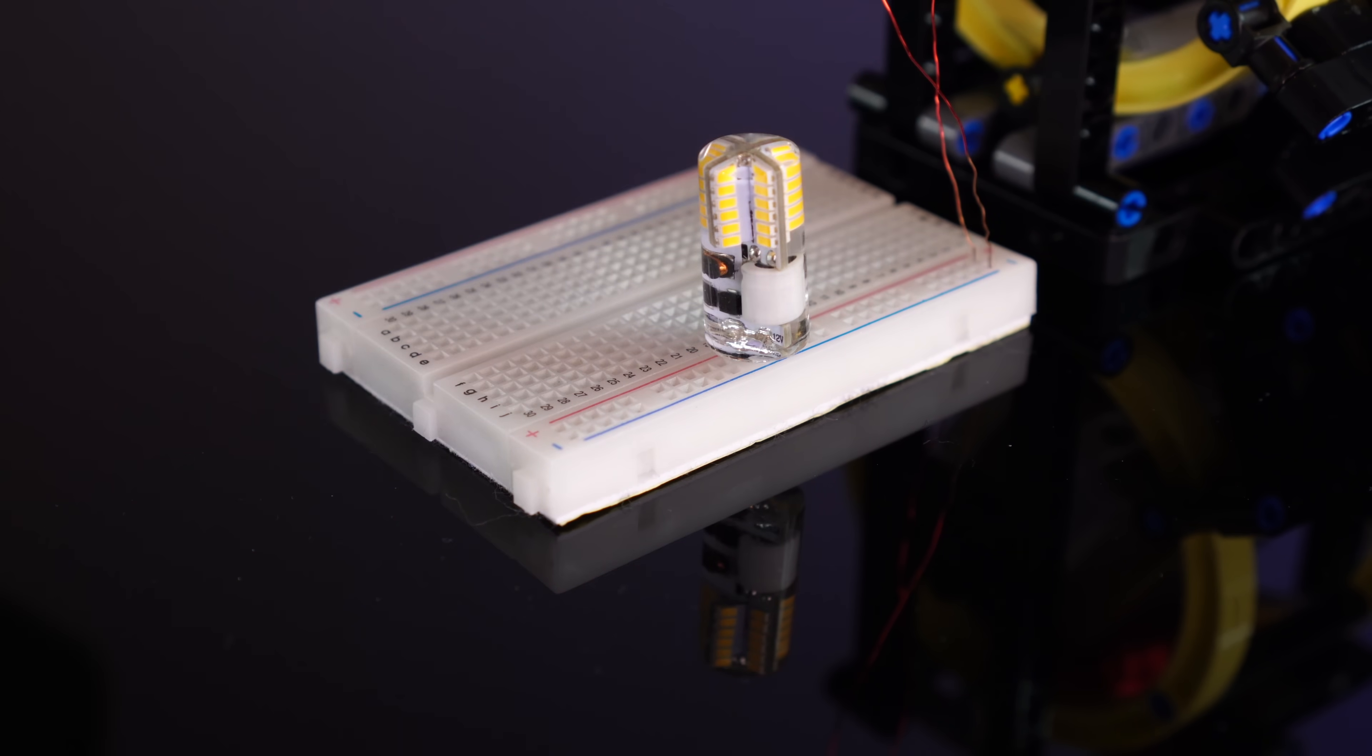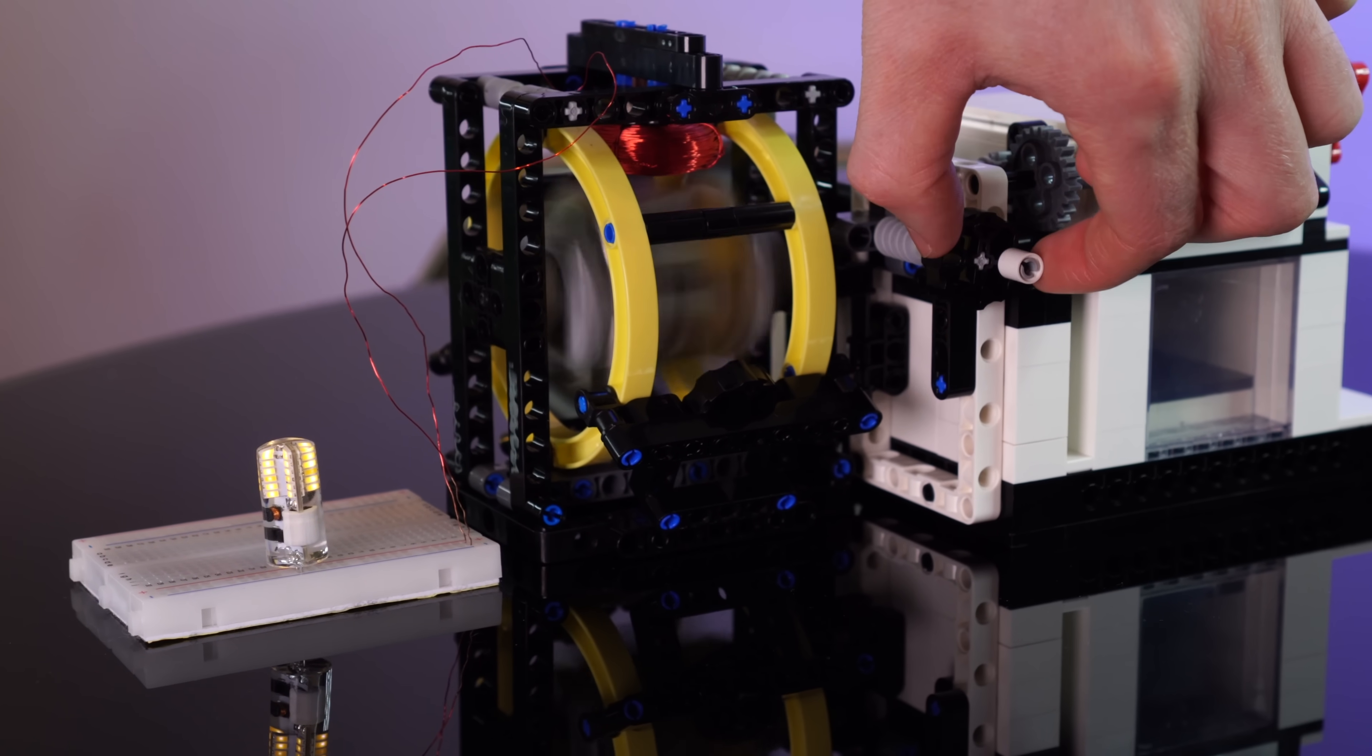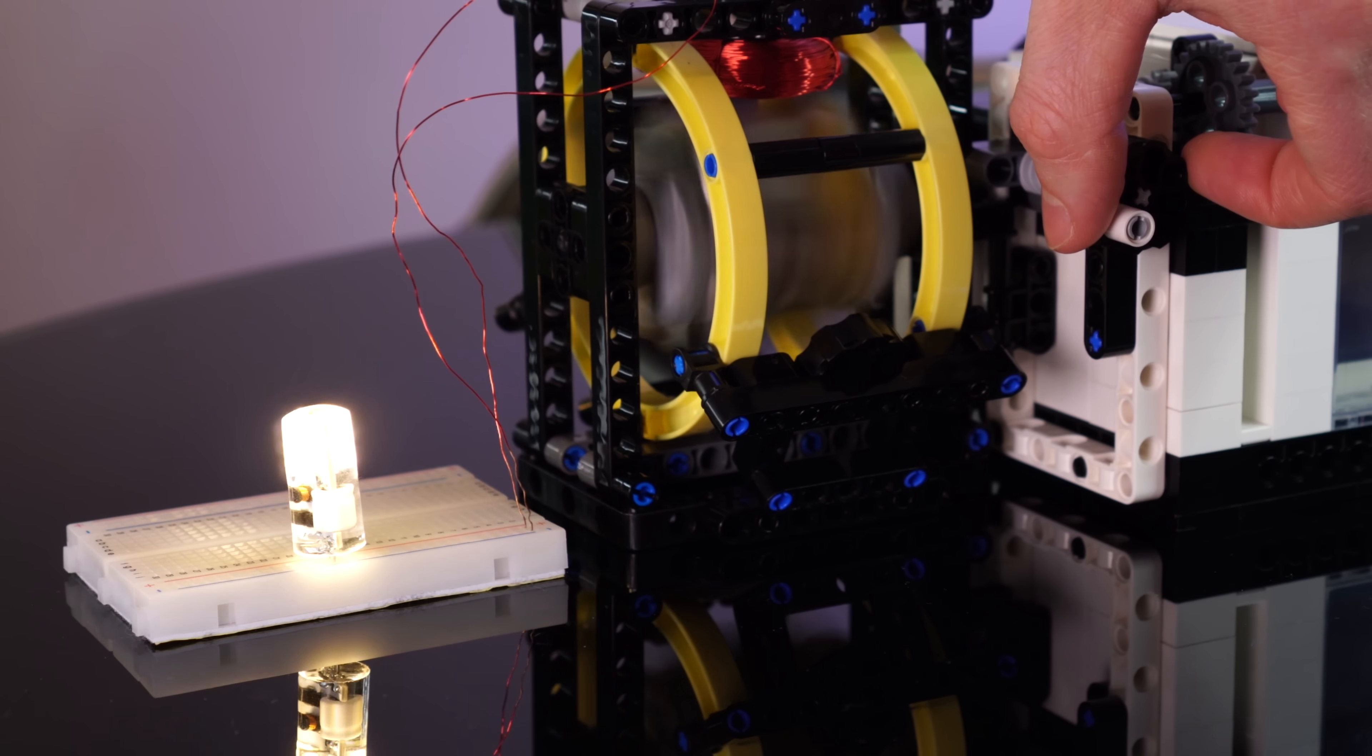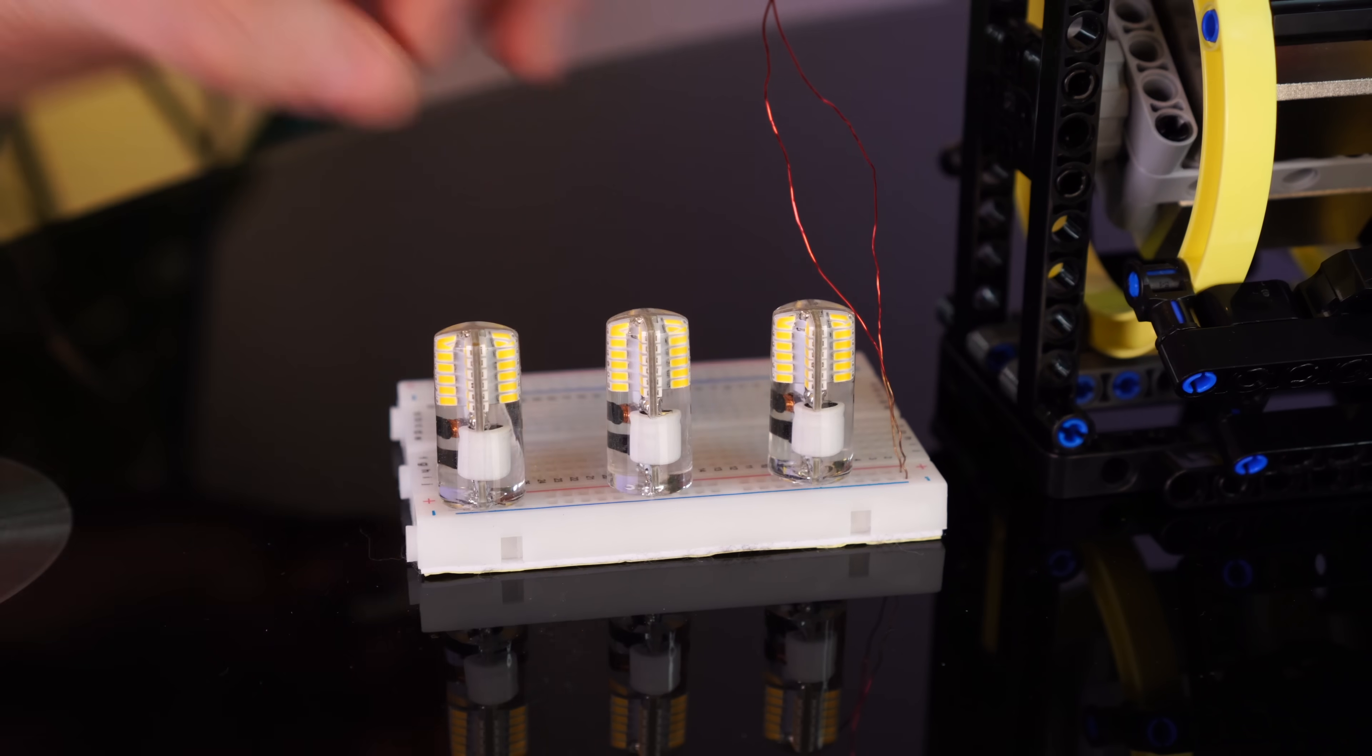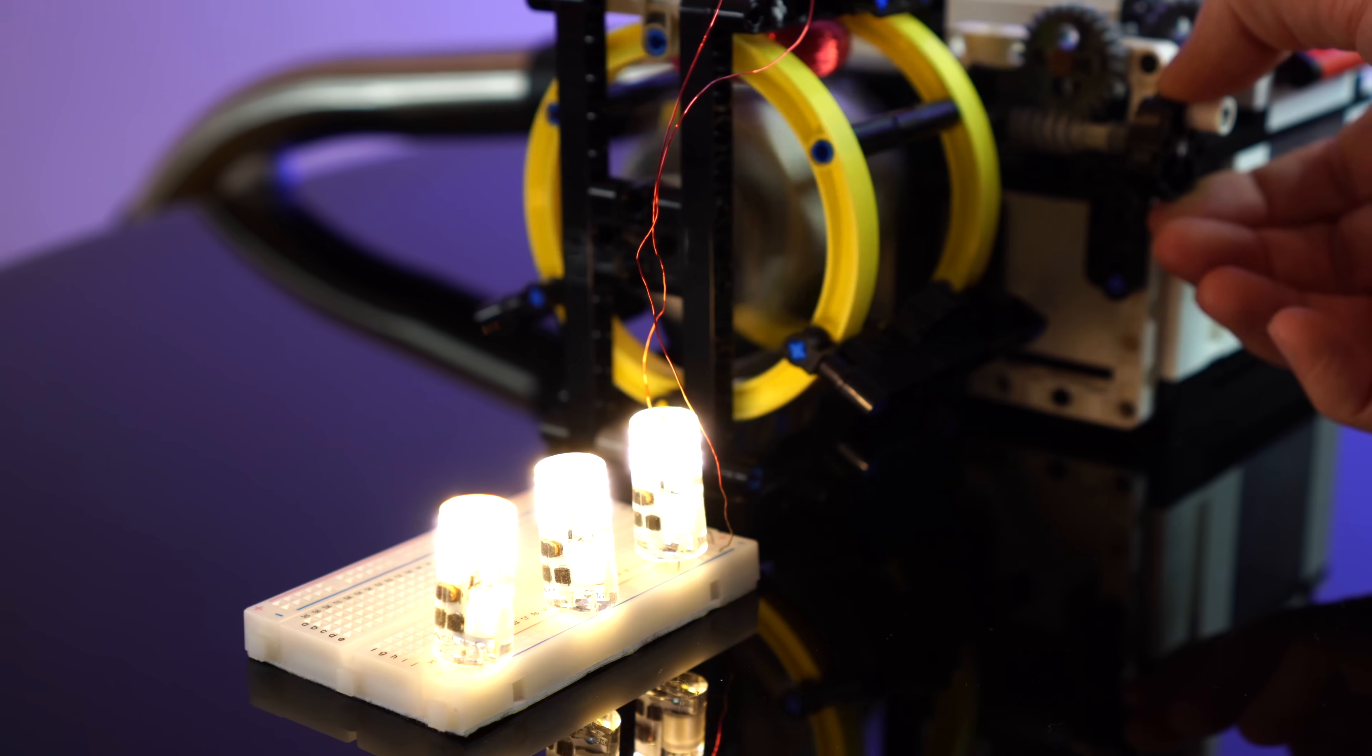So how about we try something a little beefier? This here is a 12 volt 10 watt bulb, and for this we'll likely need to get a higher speed on the generator. And here we go. We're starting to get a little glow. And if we crank it up, we get a nice high voltage to bring it up to a reasonable brightness. I just love the sound this thing makes. Man, so far the turbine is holding up really well. So what about three of these guys? Can we produce enough current to run these? Yup, no problem at all. We can get all three of these bright as hell with only a single coil.